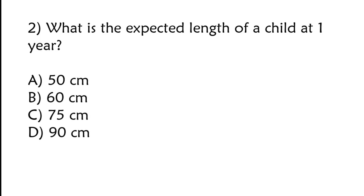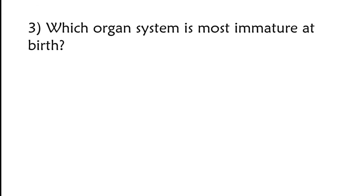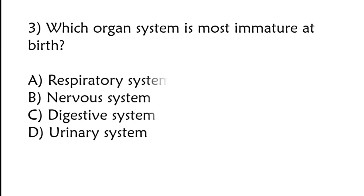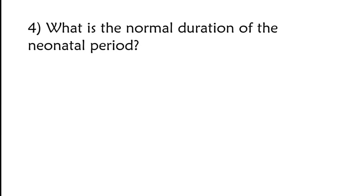75 centimeters, 90 centimeters. Correct answer is option C, 75 centimeters. Which organ system is most immature at birth? Respiratory system, nervous system, digestive system, urinary system. Correct answer is option B, nervous system.